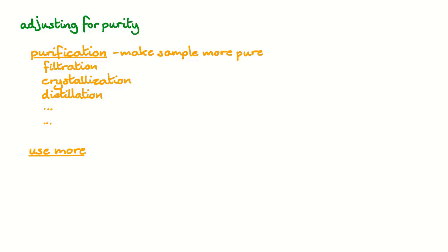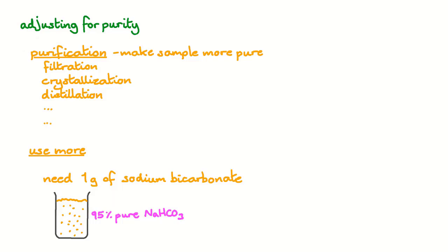The alternative is simply to use more of the sample. Let's say, for instance, you need exactly one gram of sodium bicarbonate for a reaction, but you only have 95% pure bicarbonate of soda, and the rest is perhaps something unimportant like sodium chloride. All we need to do is make an adjustment. We know it's 95% pure, so we just need to add a little bit more so that the total mass of bicarbonate is one gram. In this case, we'd need to add about 1.05 grams of our 95% pure sodium bicarbonate to have one gram of sodium bicarbonate. This is just the principle — we won't be going into the mathematics of this in this video.